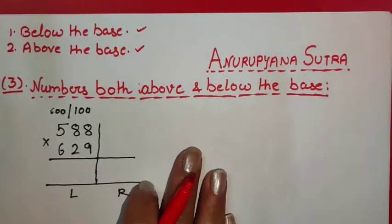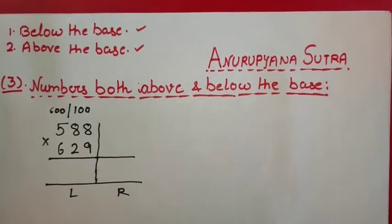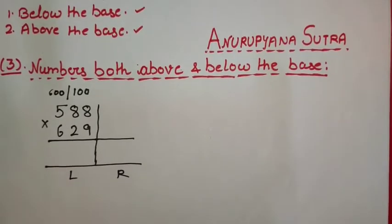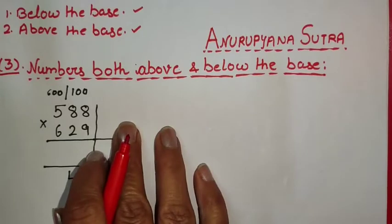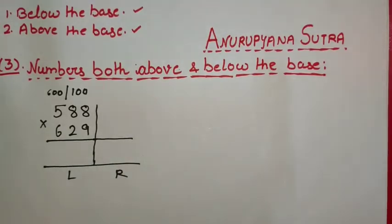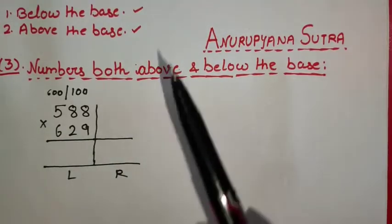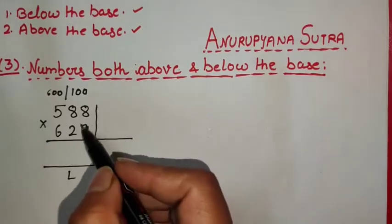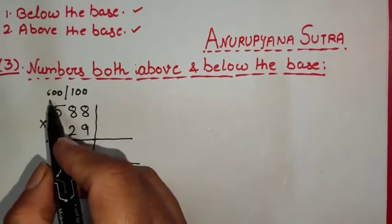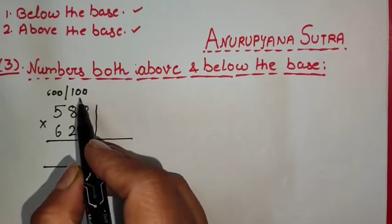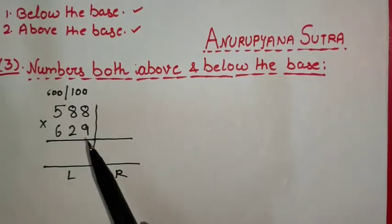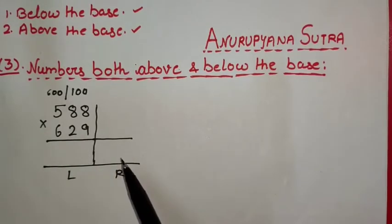Let us start with today's tutorial. We want to multiply 588 and 629. These two numbers are very far away from their actual base of 100, but they are near to 600. So 600 will act as the working base and 100 will act as the actual base.